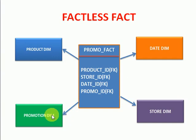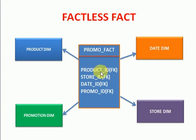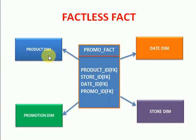Here you can see I have a promotion dimension, and similarly I am creating a promotion fact table. This table will contain all foreign keys referencing my dimension primary key IDs. From the product table you have the product foreign key, from the date dimension you have the date ID foreign key, and from the store dimension the store ID, and from the promotion dimension the promotion ID. These are all only foreign keys, with no measures. But I can still get whatever business requirement I need — total number of products sold, or store-wise total number of products, or total promotions using these foreign key IDs — and create a report or get the data.